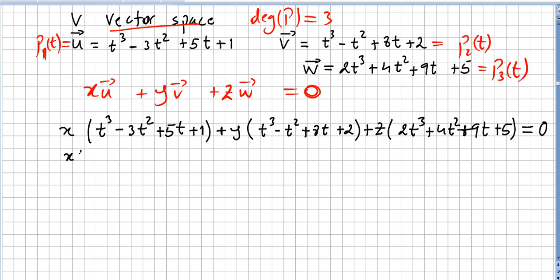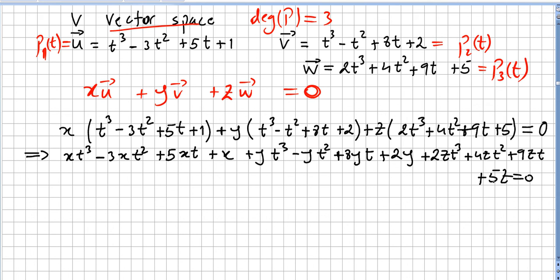So we have x times t^3 minus 3x times t^2. I hope I did not make any mistake here. I have x t^3, I have y t^3, and here I have 2z t^3, so that will be x plus y plus 2z times t^3.